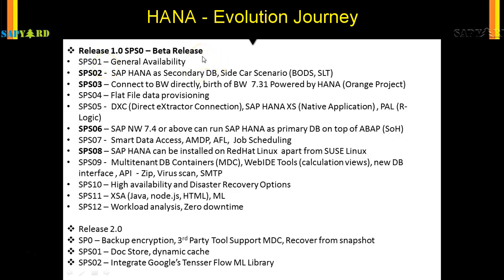Not many companies were adopting it, so SAP released HANA as a secondary database — the sidecar scenario. A company could keep their primary database, whether Oracle, SQL, or another, and run HANA on the side to test its in-memory capabilities. If satisfied, they could then switch. So the full migration feature wasn't there yet, but you could test the power of the secondary HANA database.